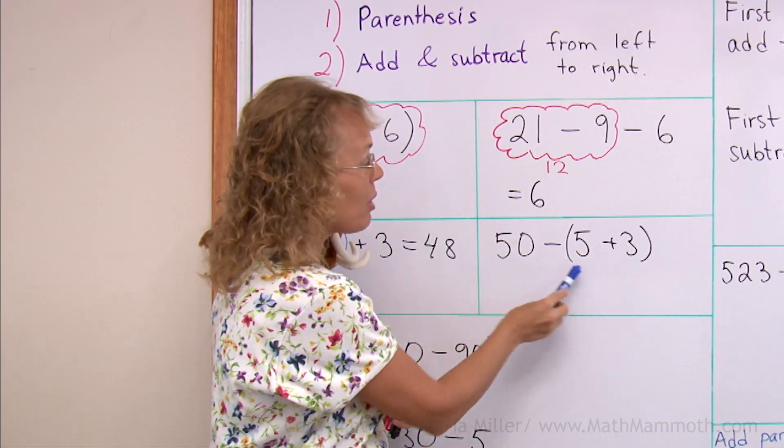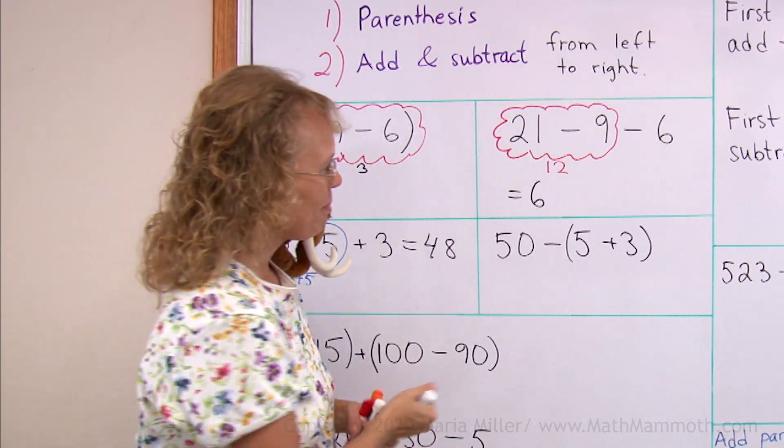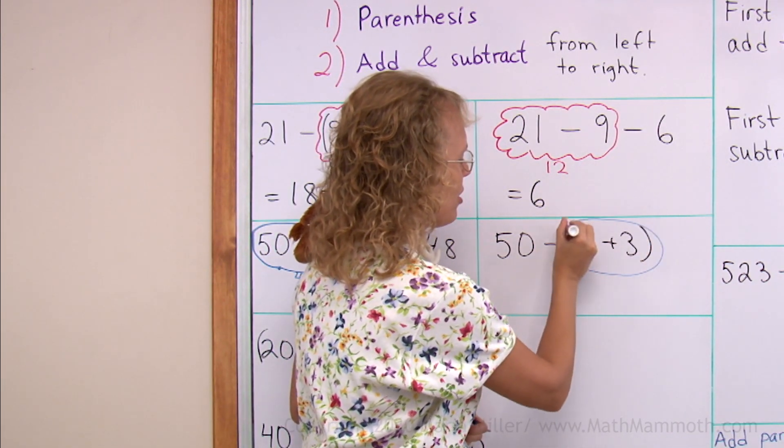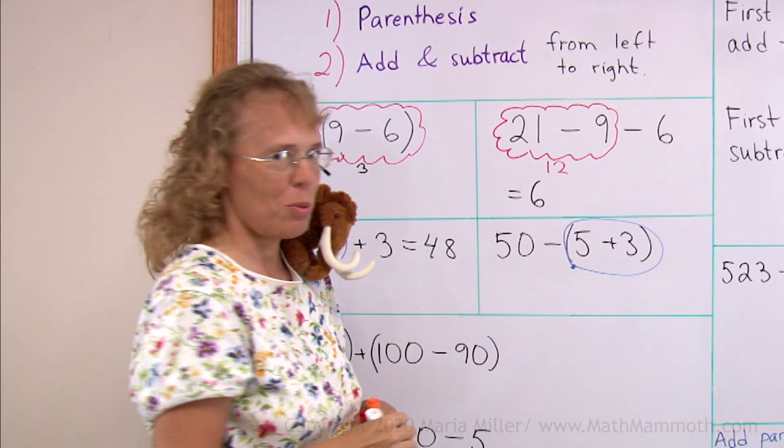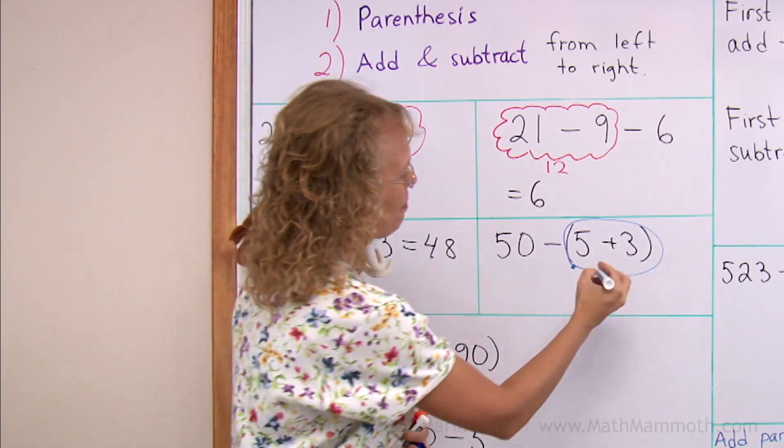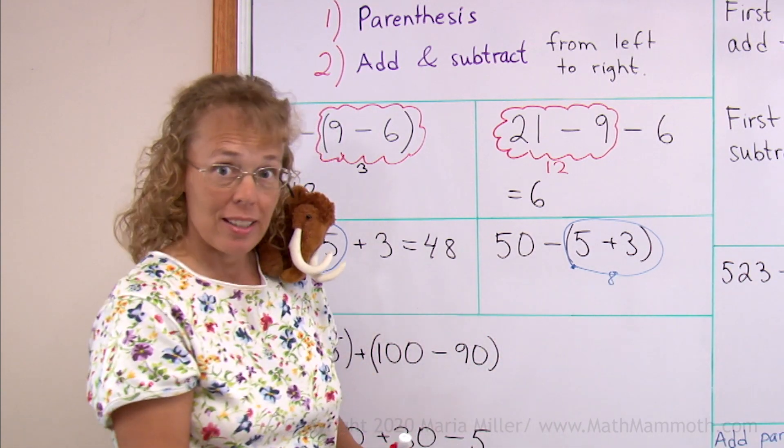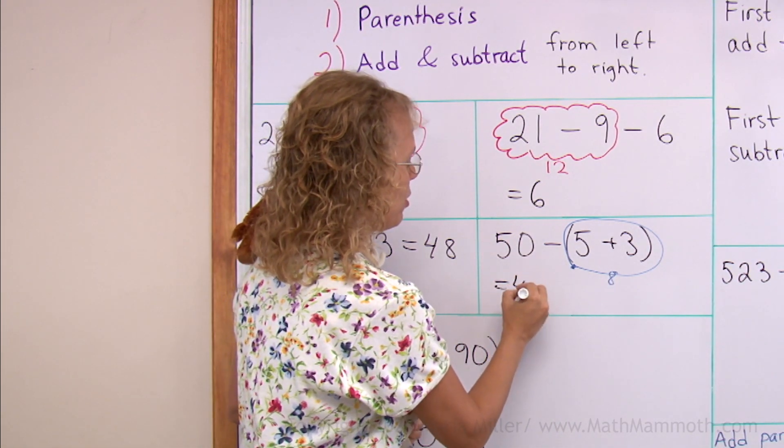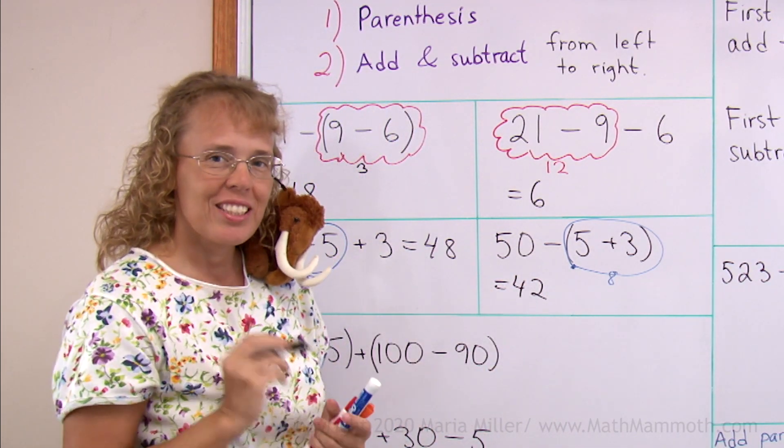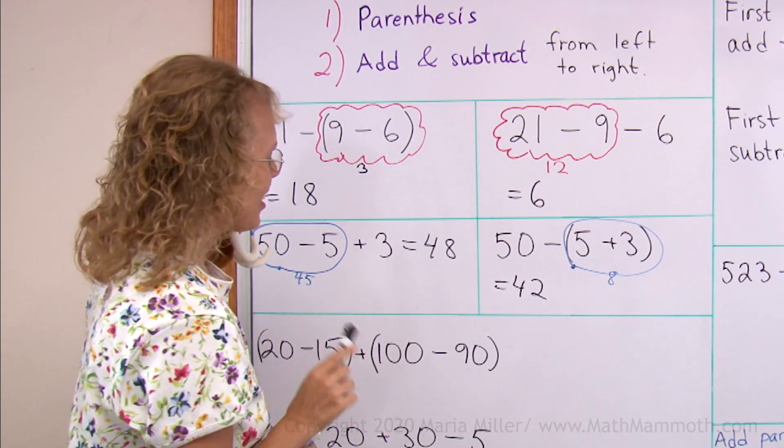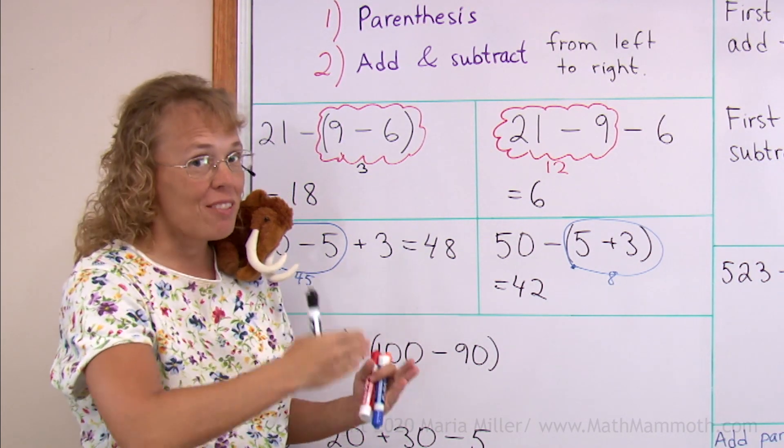Now over here, we have parentheses. So this has to be done first. That's my balloon. 5 plus 3, that's 8. And then 50 minus 8 equals 42. So you can see that the parentheses make a difference. The answers are different whether we have parentheses or not.